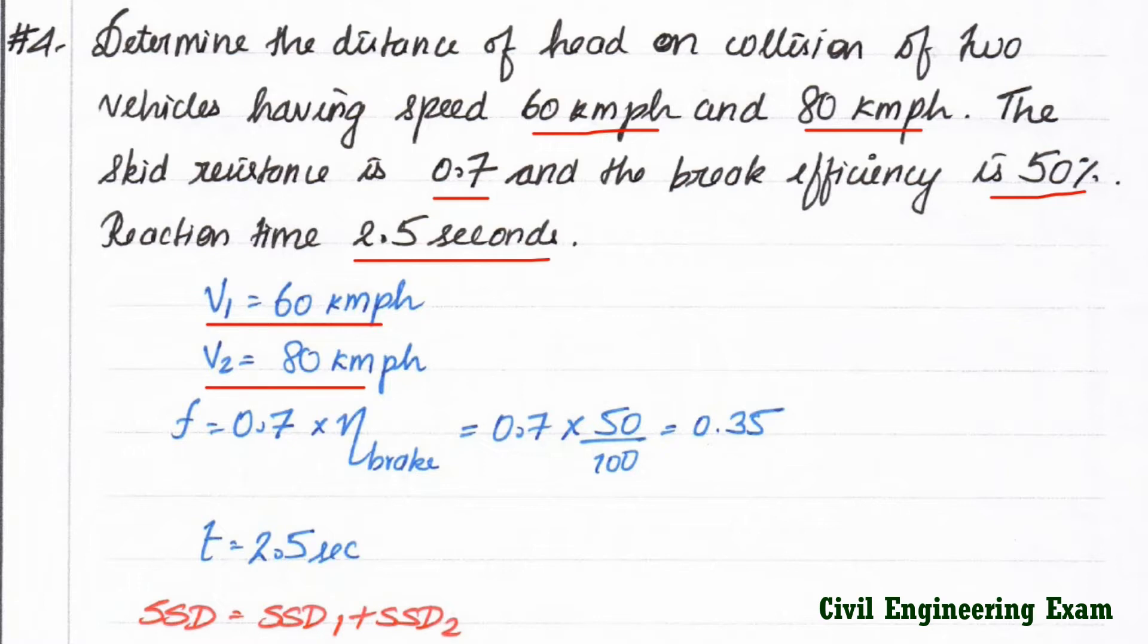Now we have to find out the F value. F is equal to 0.7 into NETA brake. That is 0.7 skid resistance into NETA is the efficiency, into 50 divided by 100. That is 50% so we have to put 50 divided by 100. We got the value of 0.35.